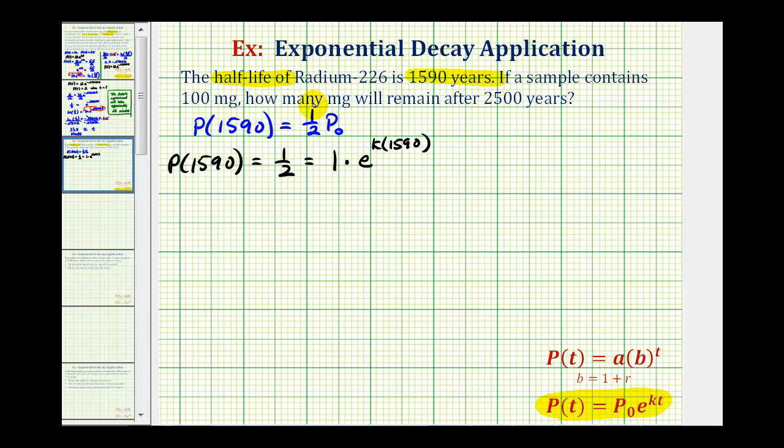So now we can solve this equation for k. We would have one-half equals, of course we can drop this one here, so we'd have e raised to the power of 1,590k. And now to solve for k, we'll take the natural log on both sides of the equation.